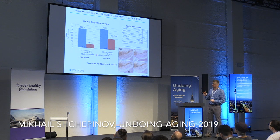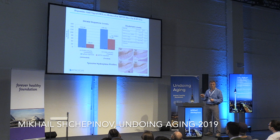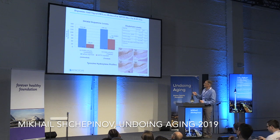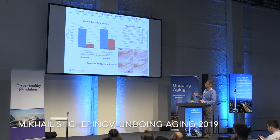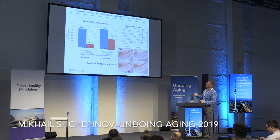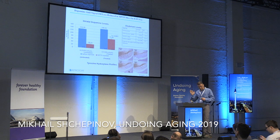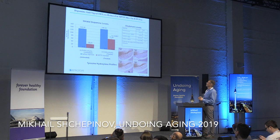Encouraged by this, we first tried the MPTP model of parkinsonism. The bottom line: we could maintain higher dopamine levels in MPTP-treated mice on the deuterated PUFA diet compared to MPTP-treated mice on the non-deuterated PUFA diet. Tyrosine hydroxylase was also elevated, along with other markers. This is published if you want to look it up.